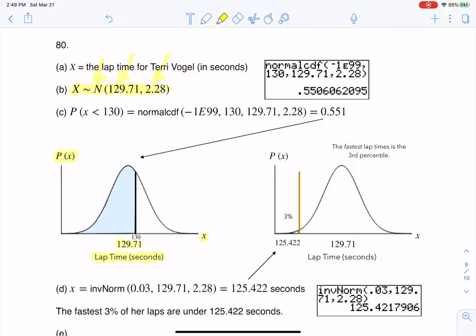Okay. So building from that, part C says find the percent of her laps that are completed in less than 130 seconds.